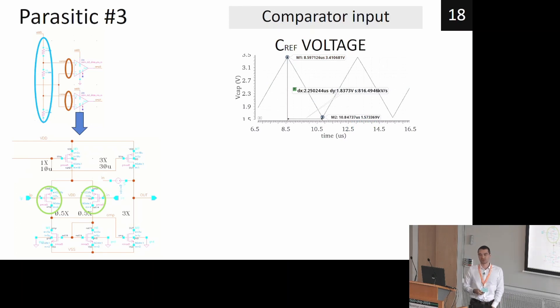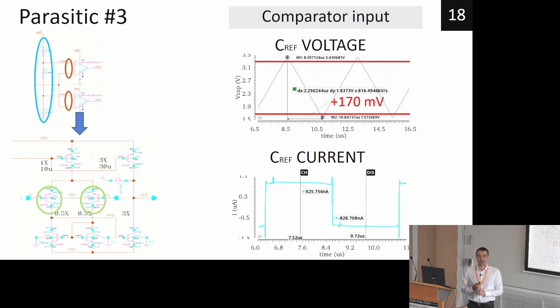And if we see now the result, the charging and discharge, the voltage on the reference capacitor overshoots by more than 170 millivolts. And also the current is distorted. The current is distorted due to the switches at the beginning of charging cycle. Then we have the current mirror distortion, and at the end we have also